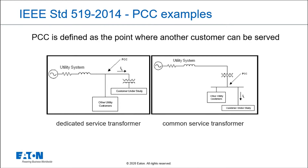The PCC, or point of common coupling, is really critical to understand — that's the point where another customer could be served. This standard makes the utility the mediator for when things go wrong. So if I, as one customer, create harmonics and you, as another customer, get the distortion I've created causing problems on your load, the utility has to be the mediator. The PCC is typically where the utility can serve another customer — usually the secondary if multiple customers are fed, or the primary if you're the only customer on that transformer.